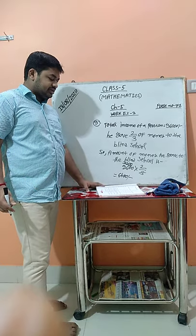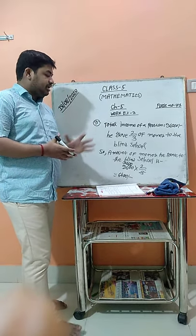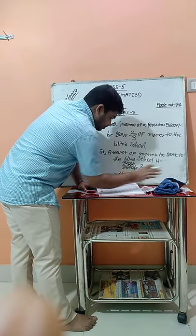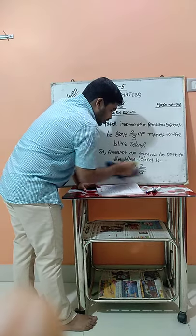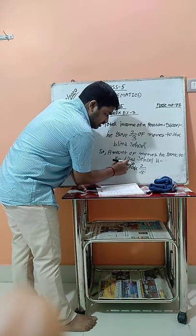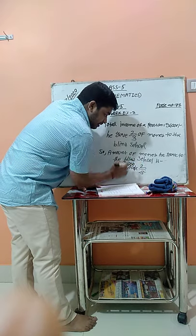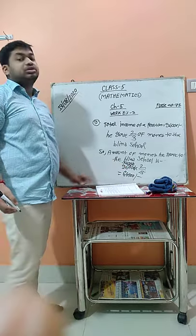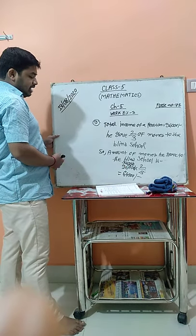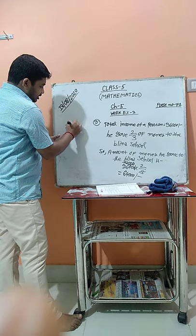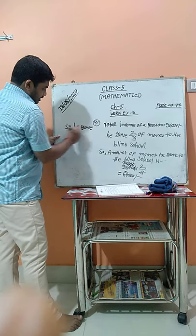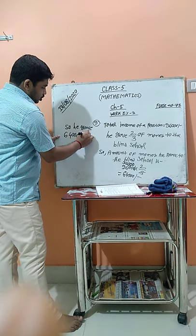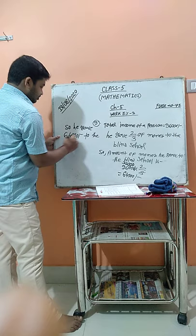So 32,000 multiplied by 2 is 64,000 rupees. So the amount of money he gave to the blind school is 64,000 rupees.